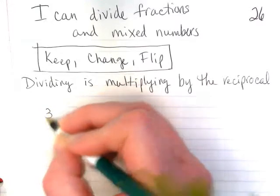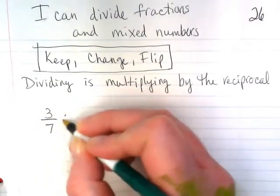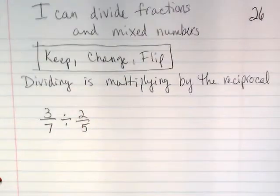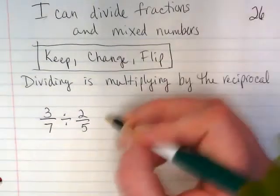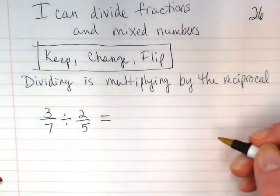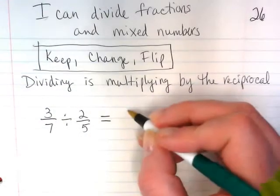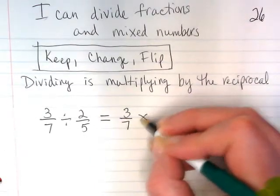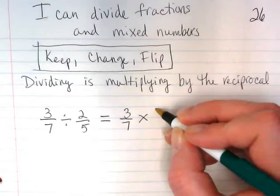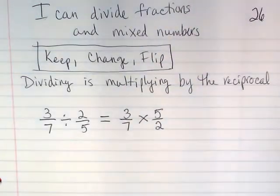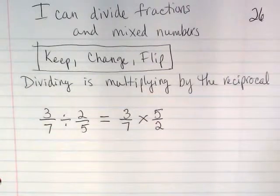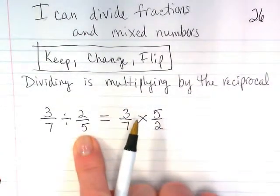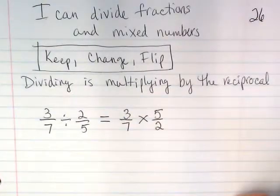So we're going to start with some examples. First one is going to be 3 sevenths divided by 2 fifths. We're going to rewrite this, and we can use the equal sign because it's the same problem. We're going to keep the 3 sevenths, change the symbol to multiplication, and flip the second fraction because we're dividing really by multiplying the reciprocal. And this is the reciprocal of 2 fifths. Reciprocal is the flip fraction.